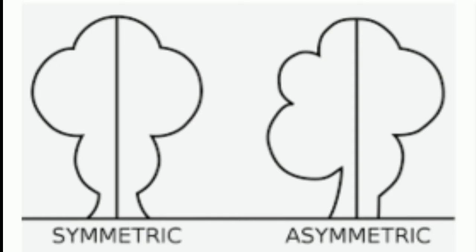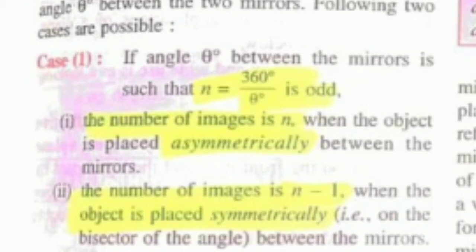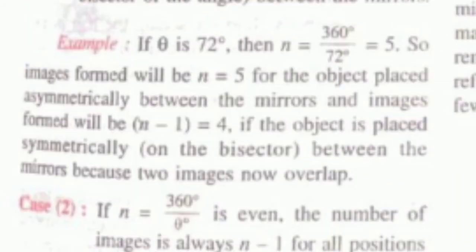When the object is placed symmetrically, then the number of images will be n minus one. Example: if theta is 72 degrees, then n equals 360 divided by 72 equals 5. So images formed will be n equals 5 if the object is placed asymmetrically between the mirrors, and images formed will be n minus 1 equals 4 if the object is placed symmetrically on the bisector between the mirrors, because two images now overlap.